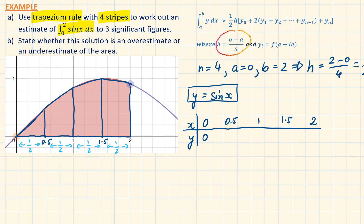x1 is equal to 0.5. When we substitute this into y equals sine x, we have our value of y1, which is 0.479. The value of y2 is 0.841. The value of y3 is given when x equals 1.5, and the final value of y is given when x equals 2.